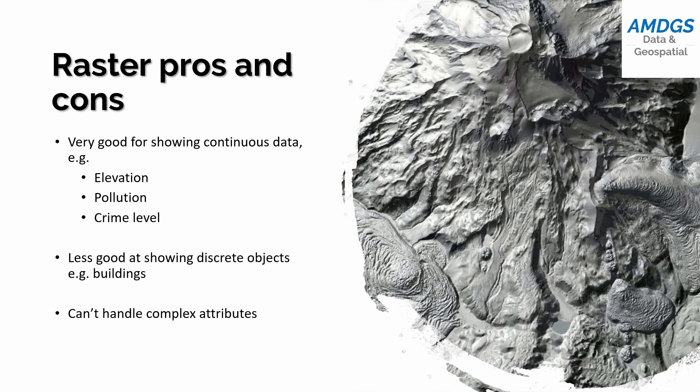What rasters are not so good for is showing individual objects. For buildings, for example, we could have a raster layer where we colour in the pixels containing the building, but if we're just interested in buildings that's not a very efficient way to show them. The other limitation of raster data is it can't have complex attributes. A building shown as a raster could have a colour or number saying 'this is a building,' but we couldn't store information like how old is this building, how high is it, how many floors, how many bedrooms — that's quite difficult to represent with a raster.